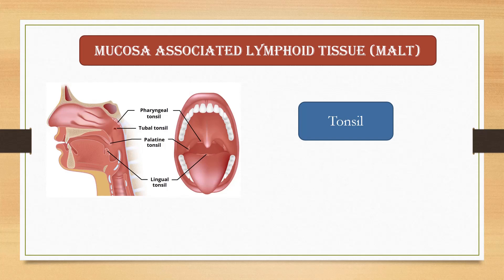Tonsils are found in four locations: lingual at the base of the tongue, palatine at the sides of the back of the mouth, tubal at the opening of the Eustachian tube, and pharyngeal at the roof of the nasopharynx. Tonsils contain lymphocytes and macrophages. It prevents the entry of pathogens through nasopharynx.